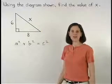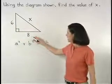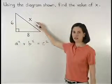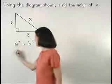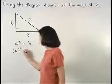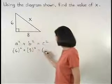So here, since our legs have lengths of 6 and 8 and our hypotenuse has a length of x, we can set up the equation 6 squared plus 8 squared equals x squared.